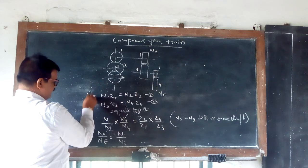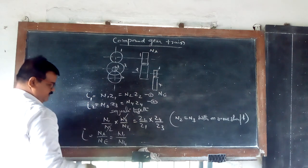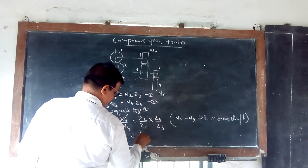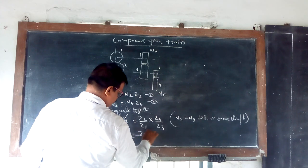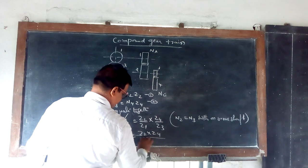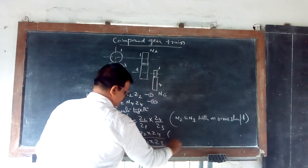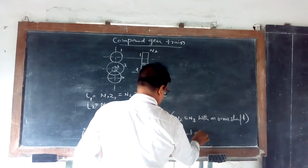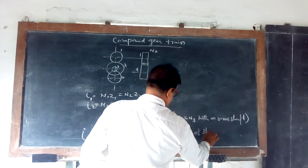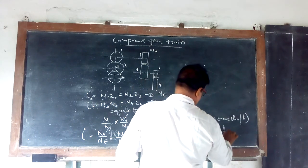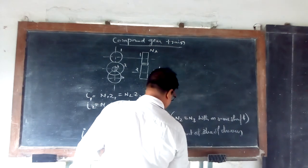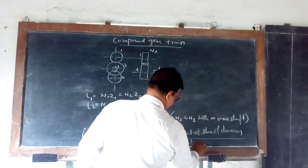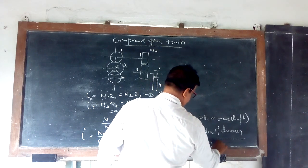Now this is I1, I2 is equal to product of teeth of driver, sorry, driven. Z2 into Z4 divided by Z1 into Z3, which is nothing but product of diameter of driven divided by product of diameter of driver.